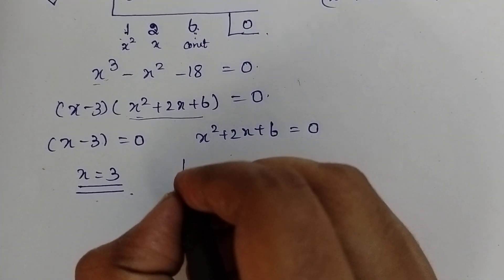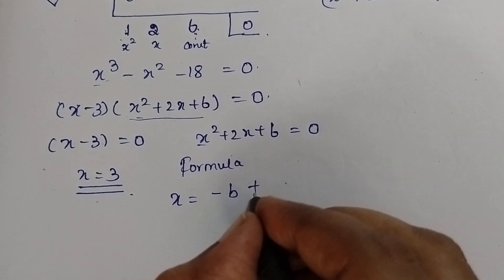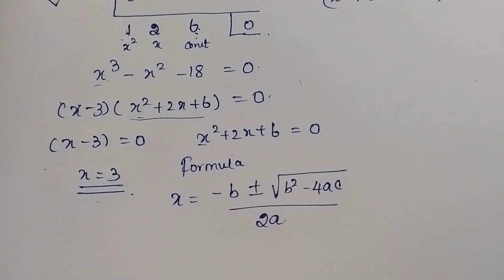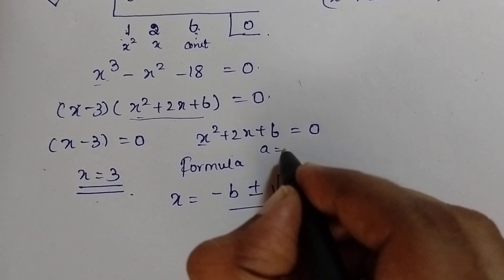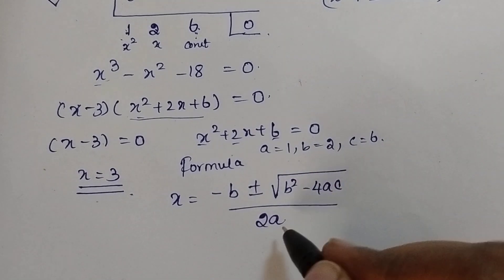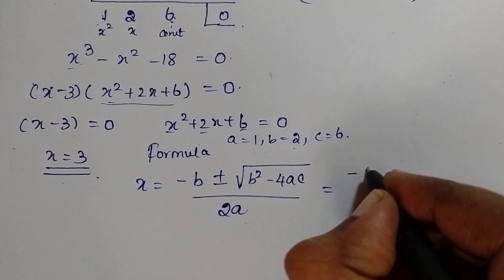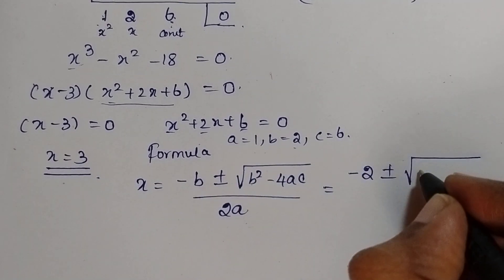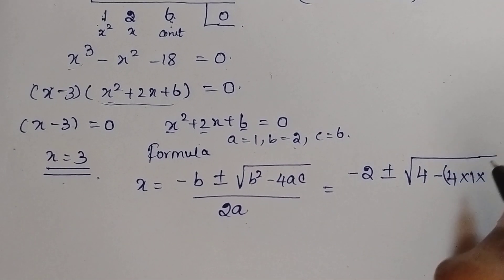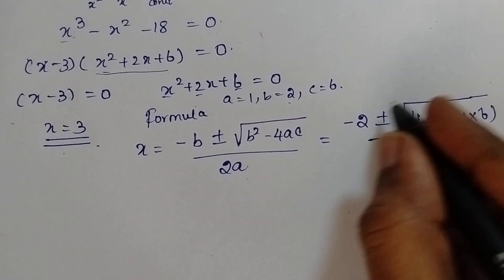So we move to the quadratic formula method. The formula is: x equals minus b plus or minus the square root of b squared minus 4ac, divided by 2a. From the equation x squared plus 2x plus 6, the values are: a is 1, b is 2, and c is 6. Just substitute in the formula: x equals minus 2 plus or minus the square root of 4 minus 4 times 1 times 6, divided by 2 times 1.